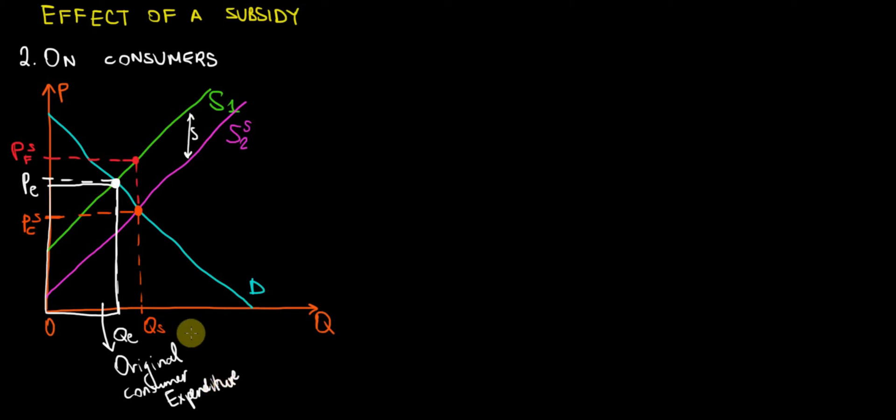What happens at the moment? Customers are paying this price and they're consuming this much quantity QS. Let me change colors and show that this is going to be the consumption after the subsidy, the purple square that I'm showing right now. So what is changing?